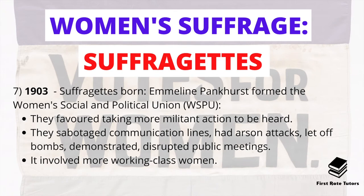This led some women — notably Emmeline Pankhurst — to feel they were not adequately represented by the suffragists. Emmeline Pankhurst along with her daughters formed the suffragettes in 1903, known as the Women's Social and Political Union under the acronym WSPU. They favoured a far more militant approach, using actions such as sabotaging communication lines, arson attacks, letting off bombs, demonstrating and disrupting public meetings. Most importantly, the suffragettes involved far more working class women.